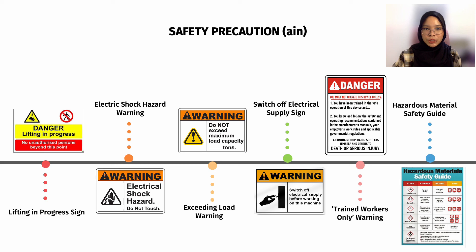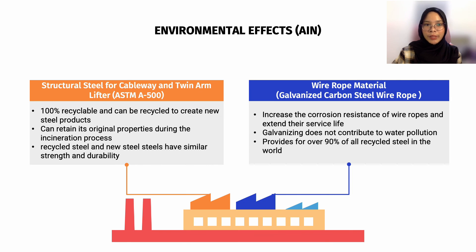The team has provided precaution notices and warnings on certain parts and devices to ensure public and worker awareness of danger while running the system. There are six different safety signs for various safety purposes. The material used for the cableway and twin arm lifter is 100% recyclable and can be recycled to create new products without losing its value. The other material, galvanized carbon steel wire rope, does not contribute to water pollution and is one of the most environmentally friendly materials currently accessible. It can be fully recycled at the end of its useful life.